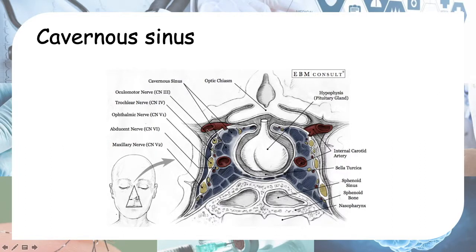So to summarize: cranial nerves 3, 4, and 6 affect the extraocular muscles, impairing eye movement. Additionally, cranial nerve 3 specifically controls eyelid elevation and pupillary constriction — so these two functions will also be affected if the third nerve is involved. These are all part of cavernous sinus syndrome.